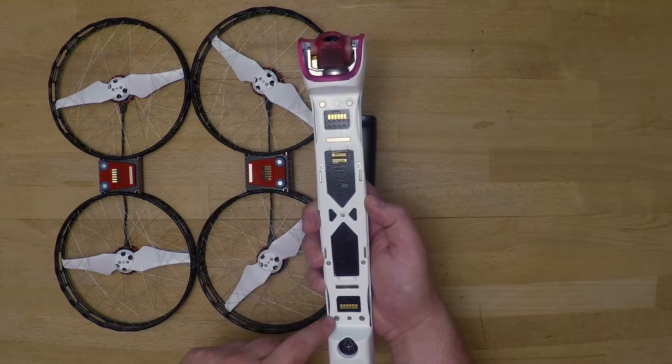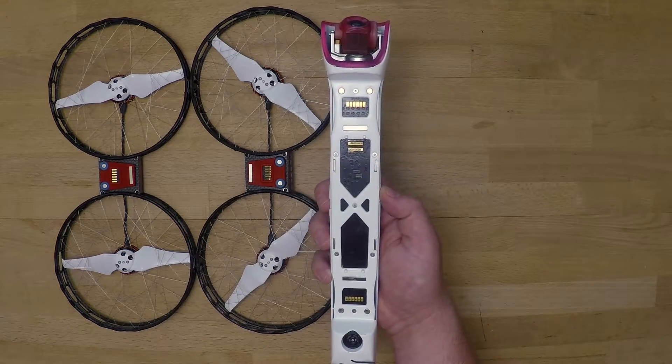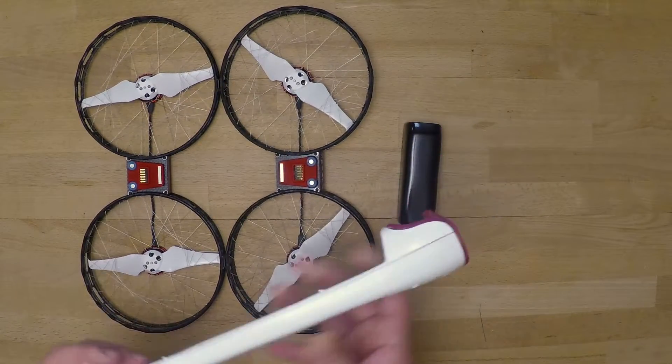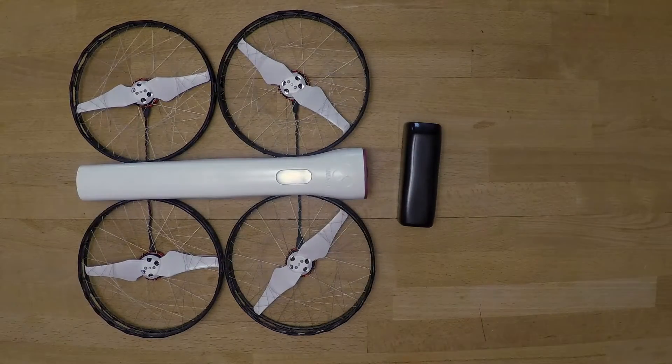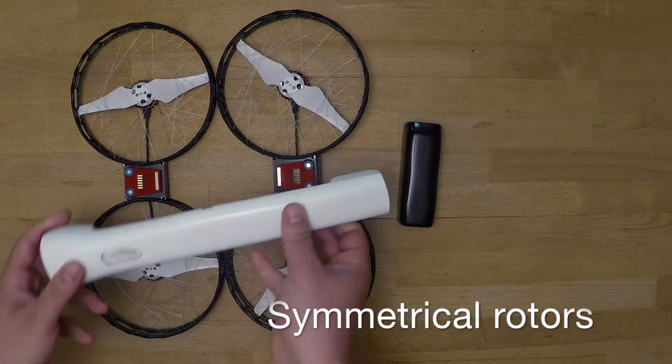You can see the matching magnets for the rotors and the matching magnets for the battery, and here are the three contacts. So to connect the body to the rotors, just snap it into place. The rotors are symmetrical, so either way is totally fine.